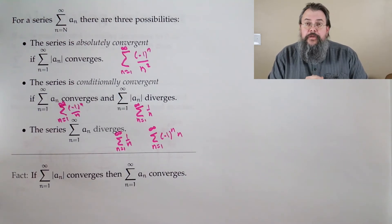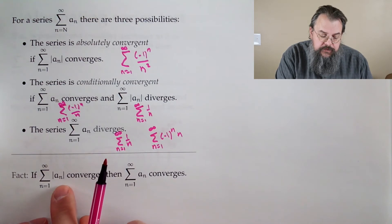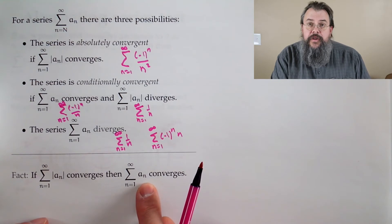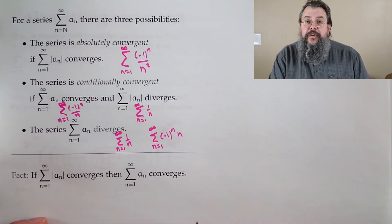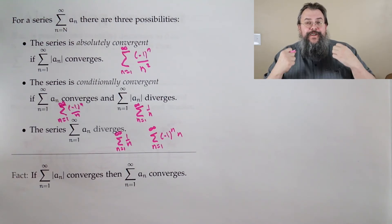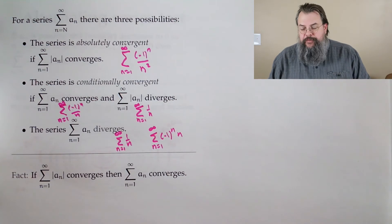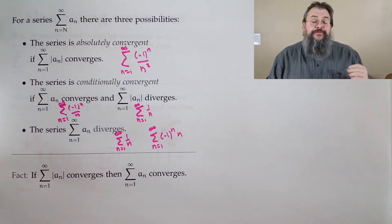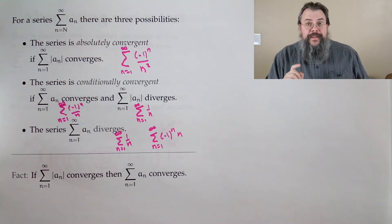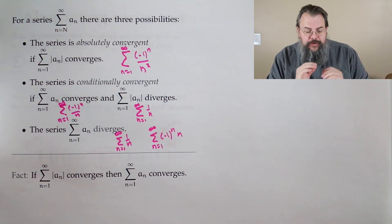Now, one thing you should observe is, if you're absolutely convergent, so in other words, you don't need the plus minus, then you also converge without the extra plus minus thrown in. So, being absolutely convergent is a very strong statement. It says, look, we really don't need any extra help. The conditionally convergent says, I could really use some extra help if you're offering it to me.